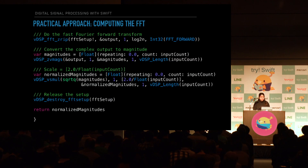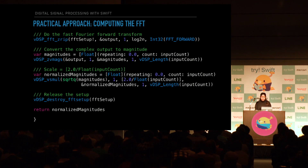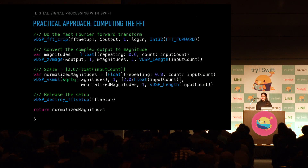Finally, we can compute the forward FFT since we're working in the frequency domain. If we're working in the time domain, we would compute the inverse. Once we've done that, we release the FFT setup, and the result is our normalized magnitudes returned in an array of floats. Not so bad, right? So we've completed step two. Now, with all this unique data, how do we display it?